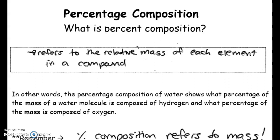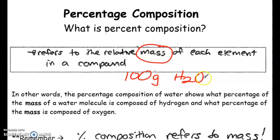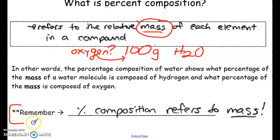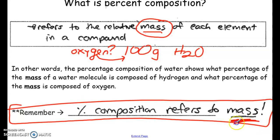The next topic is percentage composition, or percent composition. Essentially, this is looking at the percent of an element in a compound or a molecule, but referring to the percentage in terms of mass percentage. For example, if I had 100 grams of water, how much of that 100 grams would be coming just from oxygen atoms? One thing to remember: percent composition is always in reference to mass.